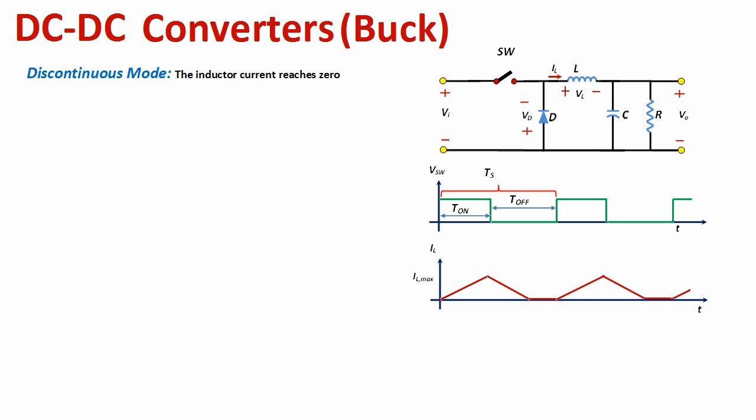The time for the current to ramp up from zero to ILmax is D·TS, where TS is the switching period — that is the on-time. The time for the inductor current to discharge to zero is called delta·TS. We call it discontinuous mode because the current reaches zero before the end of the off-time. Delta is a very important parameter, but in practice we control D (the duty cycle) since delta is not directly known.